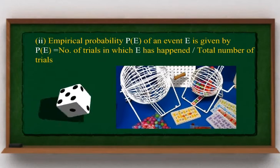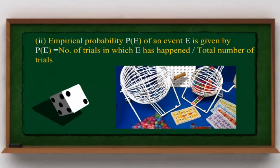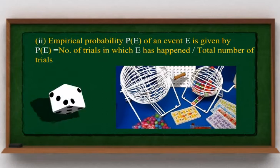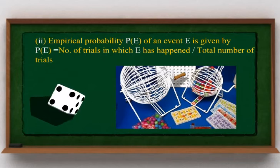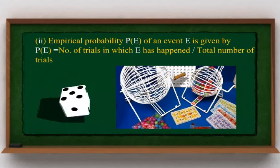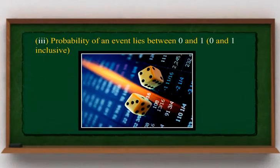Empirical probability of an event E is given by: P(E) equals the number of trials in which E has happened divided by the total number of trials. Probability of an event lies between 0 and 1, inclusive.